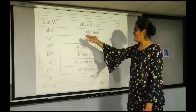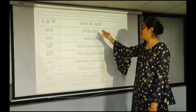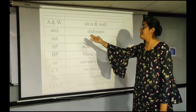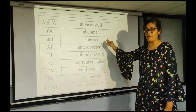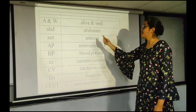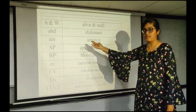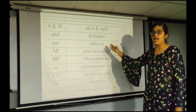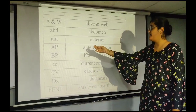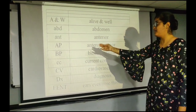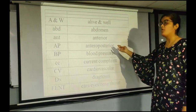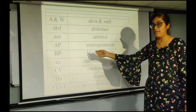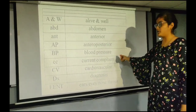One is ANW — Alive and Well. One is ABD — Abdomen. Next is ANT — Anterior. Next is AP — Anteroposterior. Next is BP — Blood Pressure.